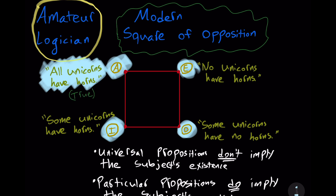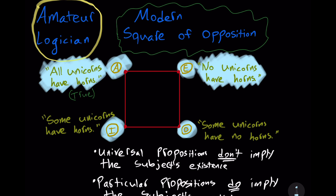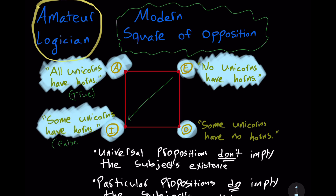Take the proposition 'no unicorns have horns.' Should we treat that as true or false? There are no unicorns in actual existence. But if we treated it as false, would that not imply by contradictory opposition that 'some unicorns have horns' is true? And we said that particular propositions imply the subject's existence, and unicorns don't exist. So if we know that 'some unicorns have horns' is false — because that proposition does imply existence — this must mean that 'no unicorns have horns' is true.